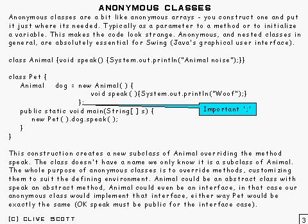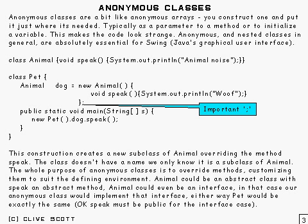So what's an anonymous class? Well, it's a bit like an anonymous array, in the sense that with an anonymous array you can just construct one and put it in wherever you want. Same sort of thing with anonymous classes — if you need a particular class, you just make one and put it in. Except, of course, there's a slight difference in that the class you make is actually a subclass of the thing you specify.